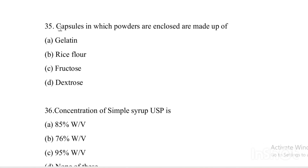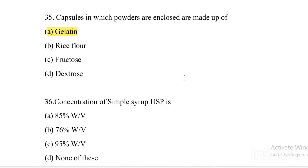Next question. Capsules in which powders are enclosed are made up of — Option A: Gelatin. Option B: Rice flour. Option C: Fructose. Option D: Dextrose. Answer is Option A, gelatin. Gelatin is what capsule powder shells are made of.